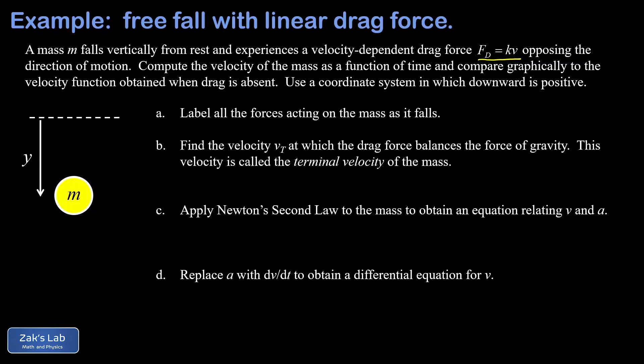The linear case is a warm-up because the math is quite a bit simpler. The big goal of this problem is to find the velocity of this mass explicitly as a function of time if we release it from rest from some height. We want to graphically compare that velocity function to free fall without drag. We'll use a coordinate system where the initial position is zero and downward is positive.